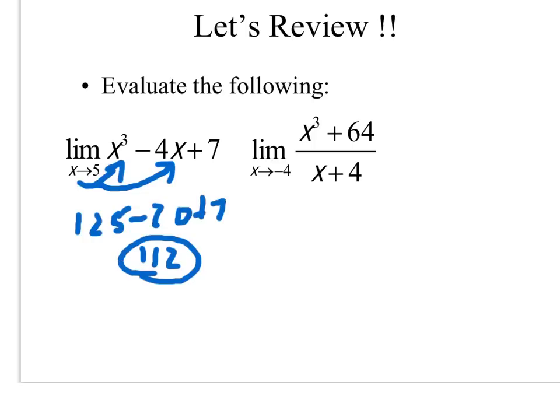For the second problem, if we replace x with negative 4, we get 0 divided by 0, which remember is the indeterminate form, meaning there is an answer, we just got to do something else. Now with this being x cubed, I would recommend doing synthetic division. So remember, we're looking for the value that causes dividing by 0, in this case negative 4.